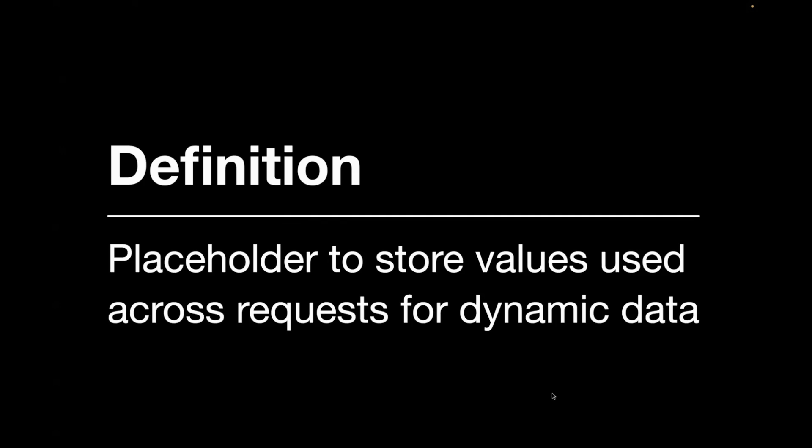The second use case is, for example, you're working for multiple environments — maybe QA, prod, pre-prod — and based on the environment the URL is getting changed. In that case you can switch between different environments based on the variable. So in short, if you have data which is getting repeated, you can use a variable.